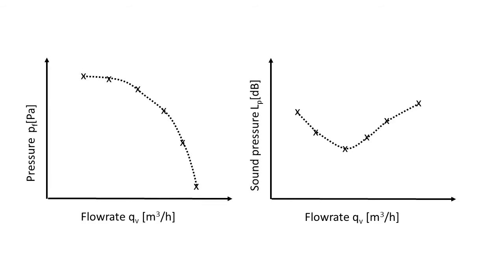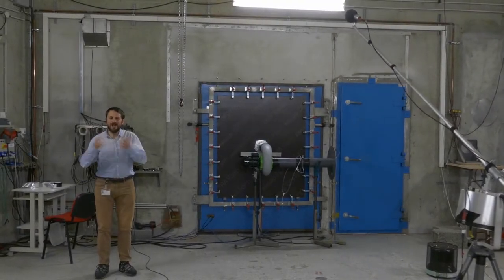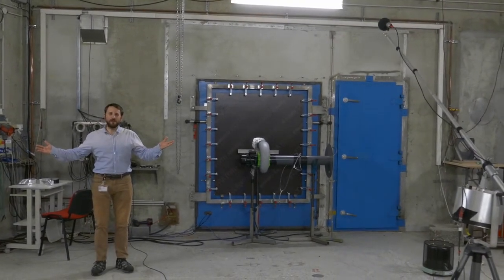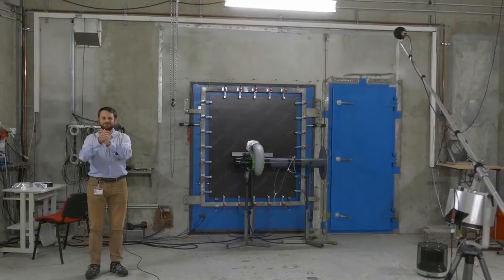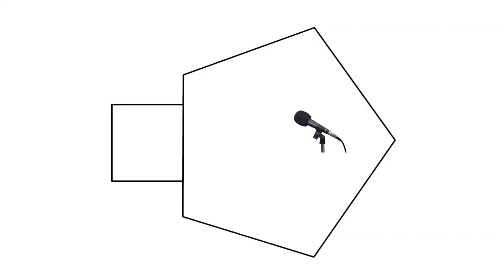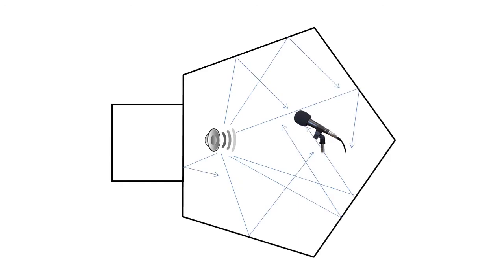So, what's a reverberant room? Welcome to a double reverberant room! Inside each room, most of the noise is reflected, but the noise field is uniform. This is the opposite of an anechoic room, where all the noise is absorbed. We install the fan between both rooms and we measure the pressure and the noise in each room.